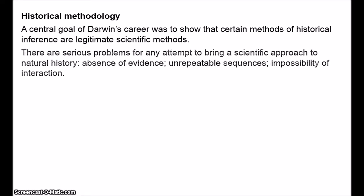There are several serious problems with any attempt to bring a scientific approach to natural history. First of all, there's the massive absence of evidence — we often find that the historical record is simply incomplete. This is especially the case with the history of life, where the only record we really have is the fossil record, and that is massively incomplete, with serious gaps especially in Darwin's day. Second, history features unrepeatable sequences, and that leads to the inability to make testable predictions. If you consider the evolutionary trajectory of the dinosaurs, for instance, that's clearly a unique event — it happened once and it's not going to happen again.